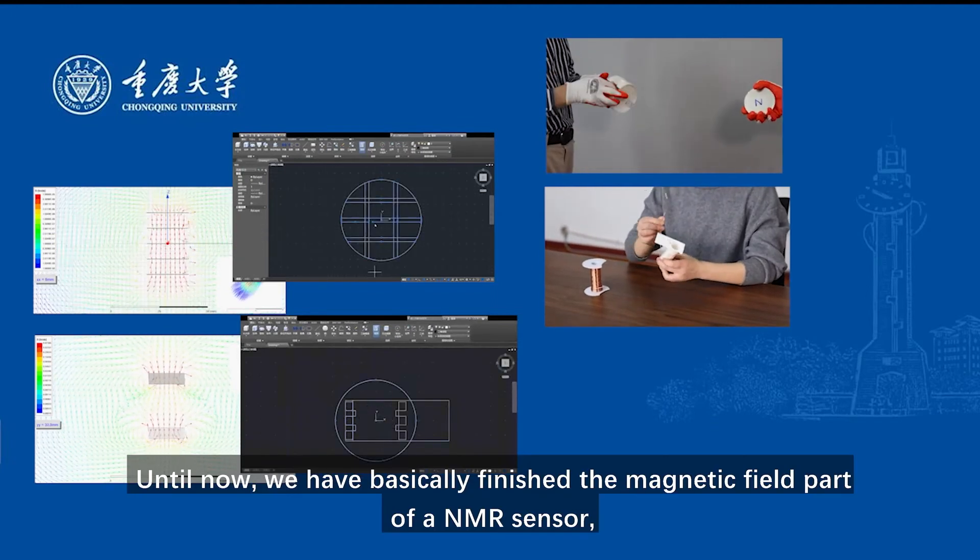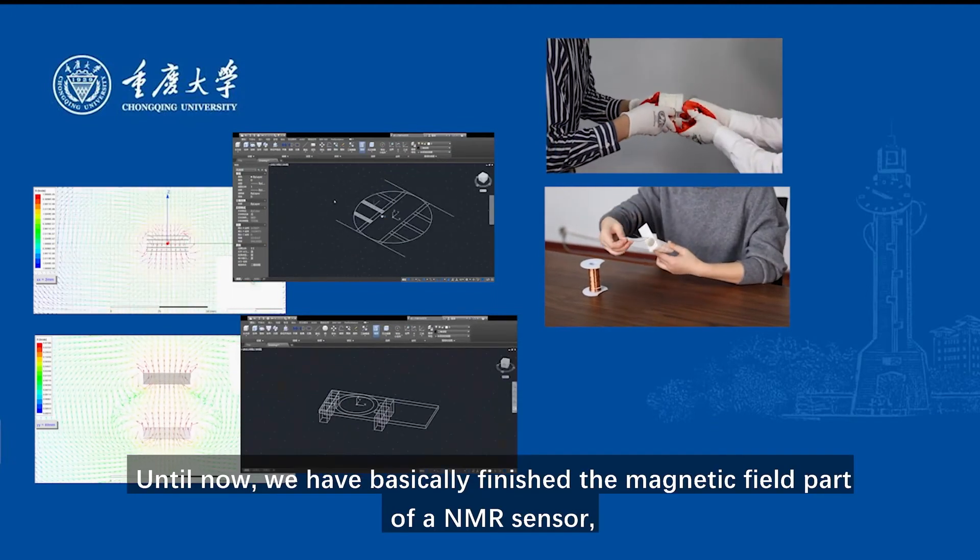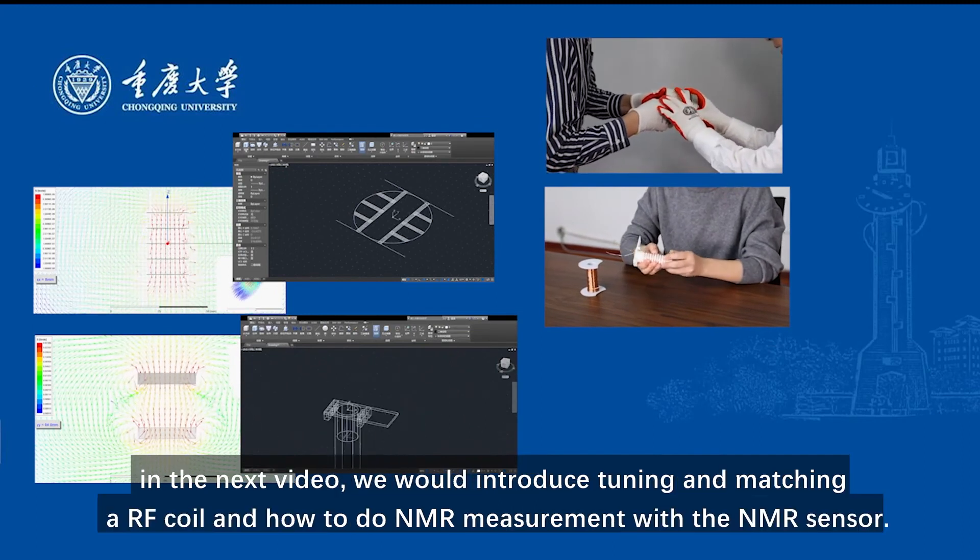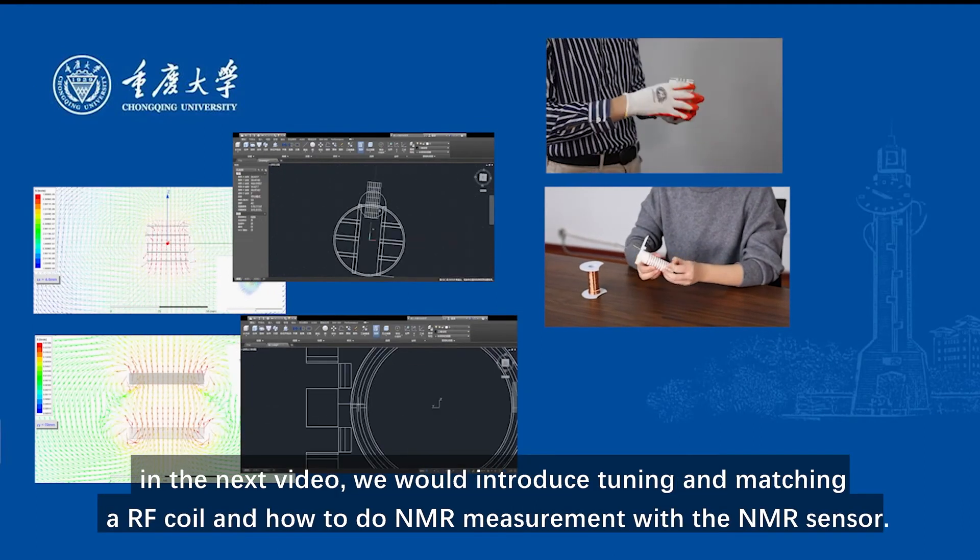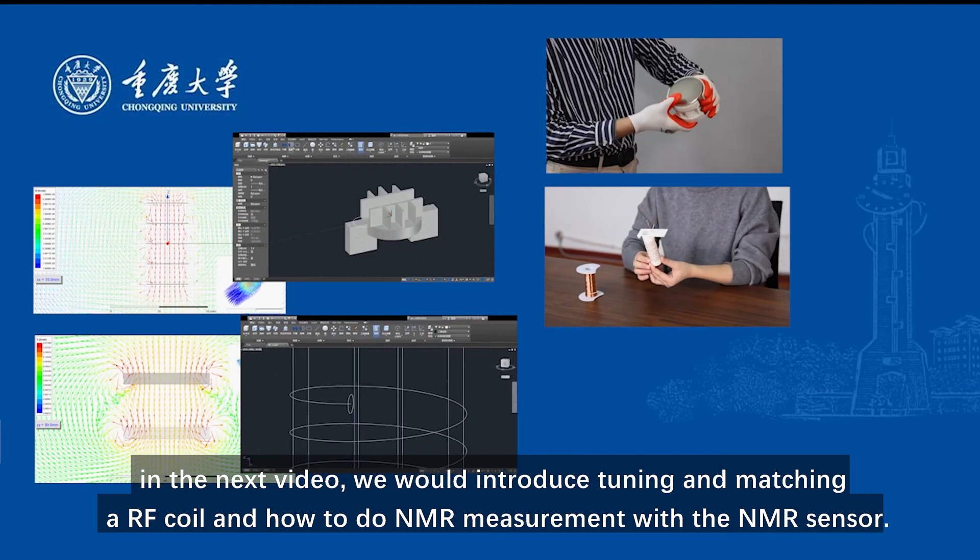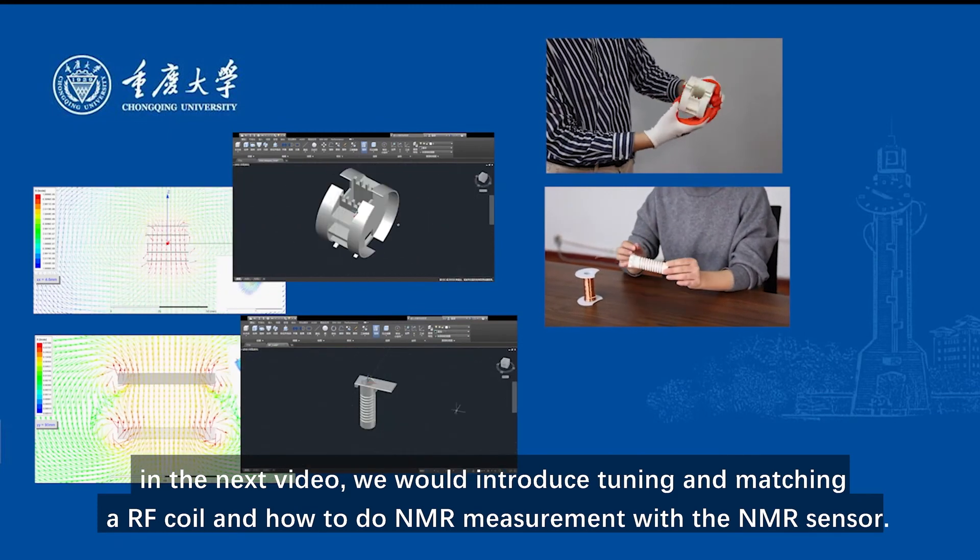Until now, we have basically finished the magnetic field part of the NMR sensor. In the next video, we will introduce tuning and matching RF coil and how to do NMR measurement with the NMR sensor.